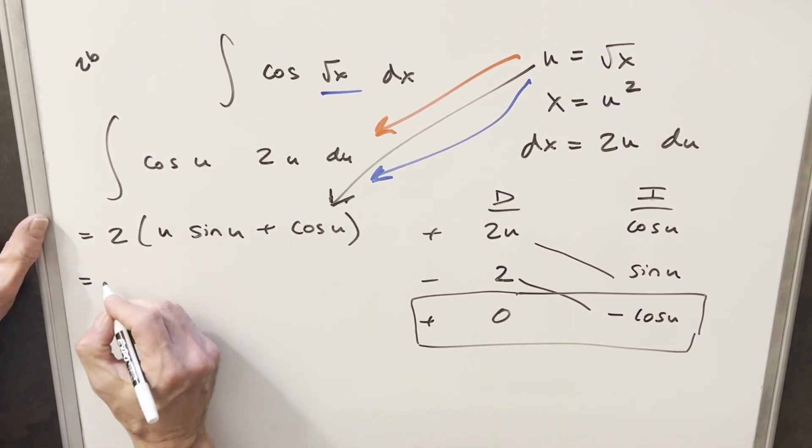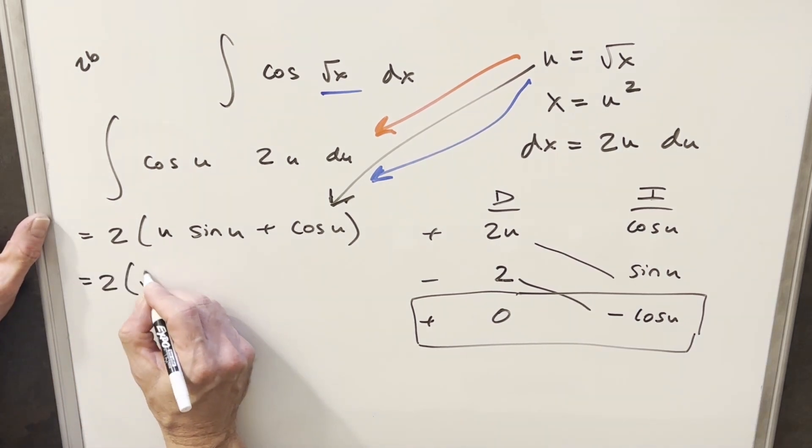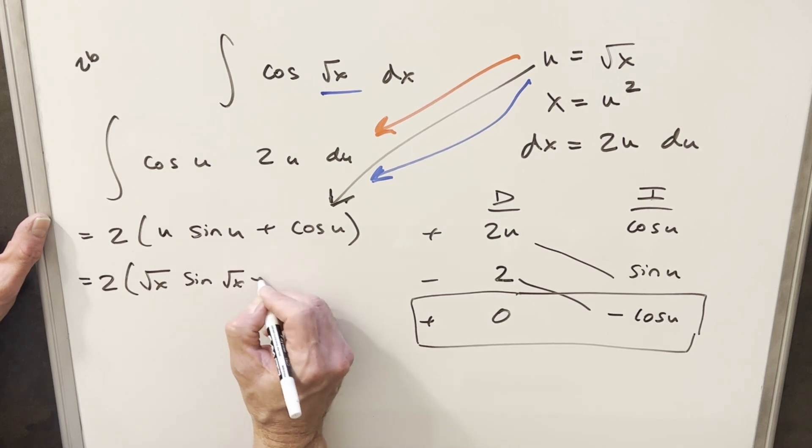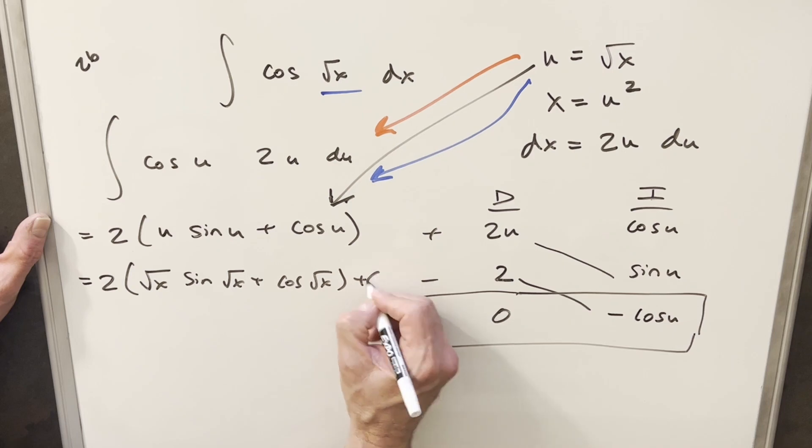And so let's see what we have. So for our final solution, we're going to have 2u is going to be square root of x, sine of u. So we're going to have sine square root of x plus cosine square root of x plus c.